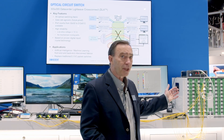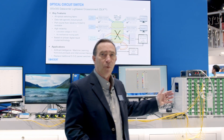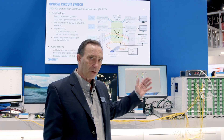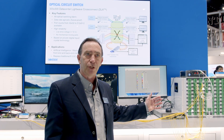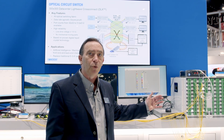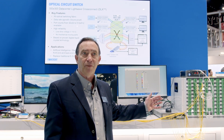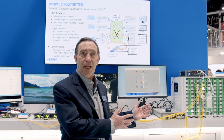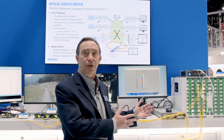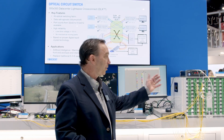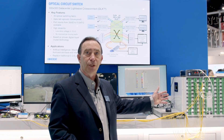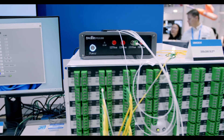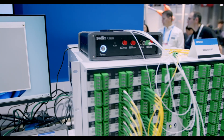The switch we have here can be provided in various configurations, as small as 32 by 32 and as large as 512 by 512. What we're showing here today is our first demonstration of a 300 by 300 switch — meaning there are 300 input ports and 300 output ports.